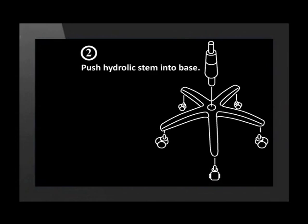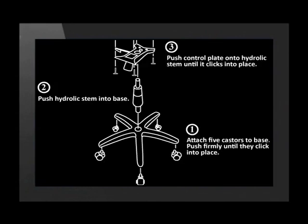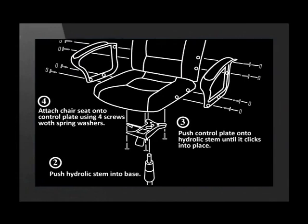Instruction 2 tells us to push the hydraulic stem into the base. Instruction 3 tells us to push the control plate into the hydraulic stem until it clicks into place. Instruction 4 says that we need to attach the chair seat onto the control panel using the four screws with spring washers.